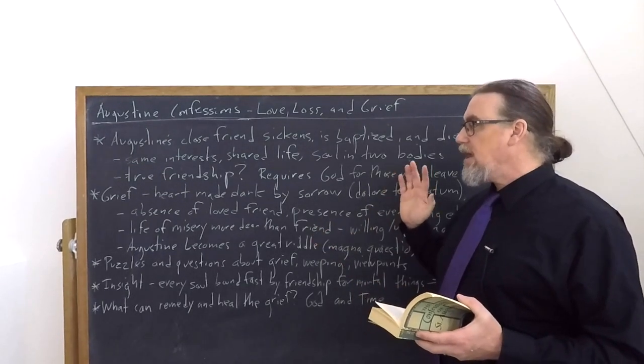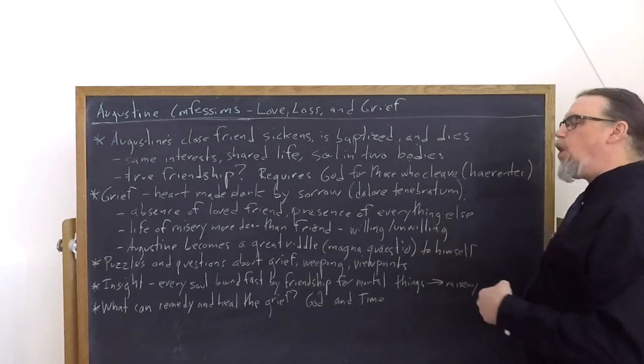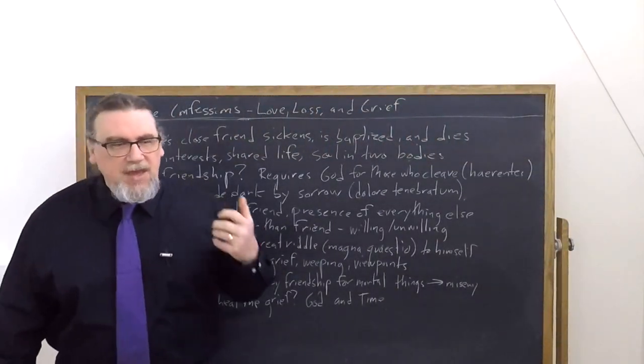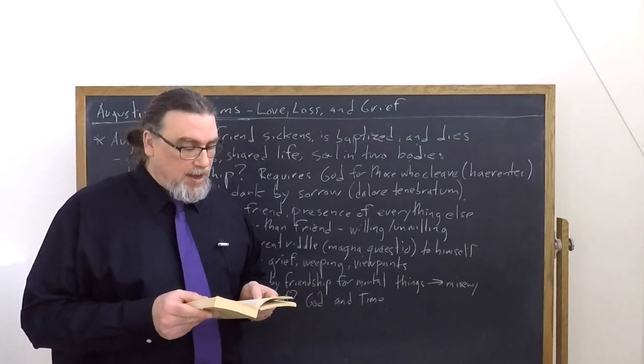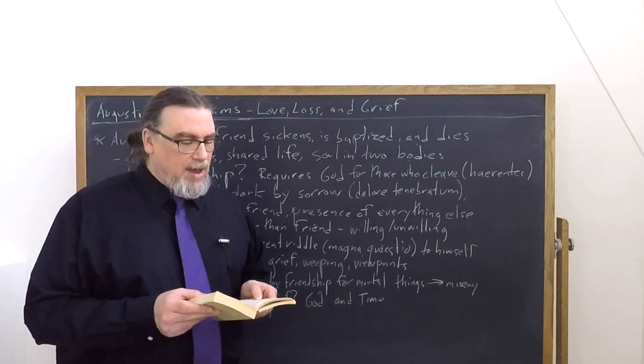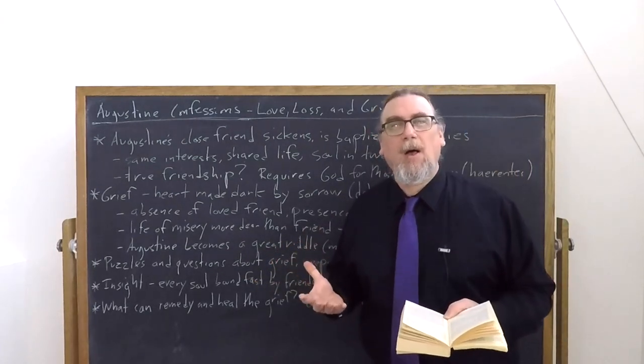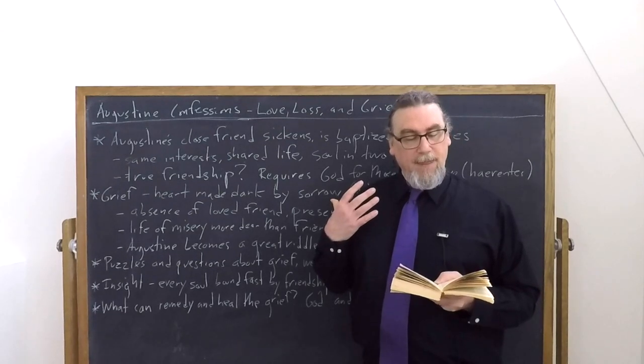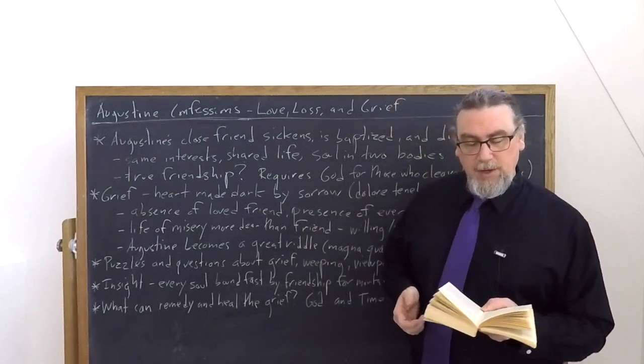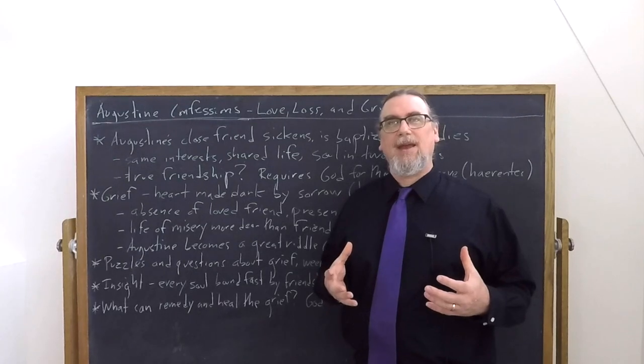Augustine, he tells us, becomes a great riddle and the word riddle actually translates the Latin quaestia, a question, a question to himself. He doesn't understand himself. He doesn't understand the feelings that he's having. He doesn't understand his reactions. He says, I questioned my soul as to why it was so sad and why it affected me so grievously. And it could answer me nothing. If I said to my soul, hope in God, well, that's not helpful. He says it did right not to obey me because the man most dear one who she had lost, my soul was more real and more good to her than the fantasy in which she was made to hope.